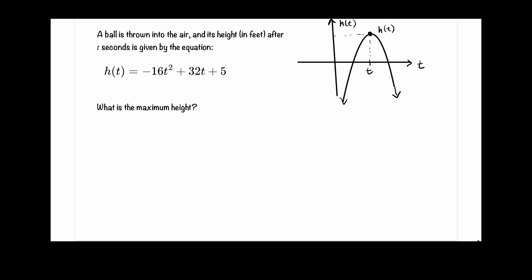Given the quadratic equation we have for the height, it is in the standard form of ax squared plus bx plus c. The vertex occurs at when t is equal to negative b over 2a. Let's plug those numbers in.